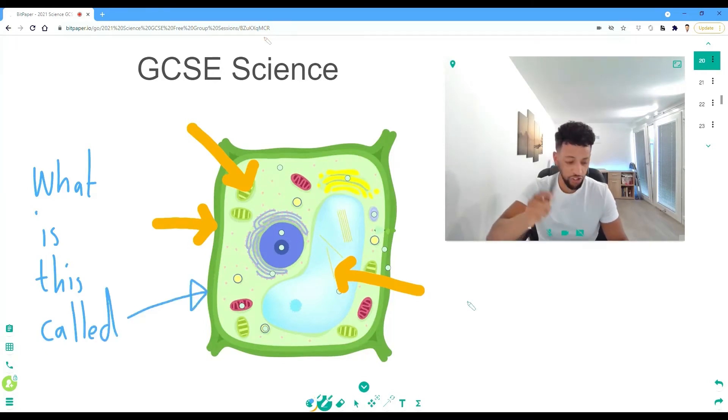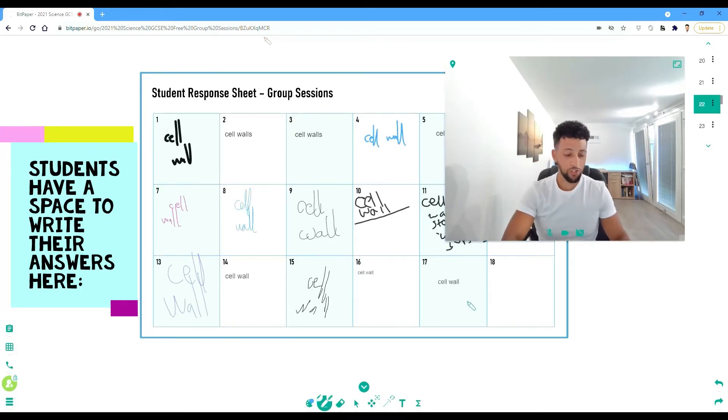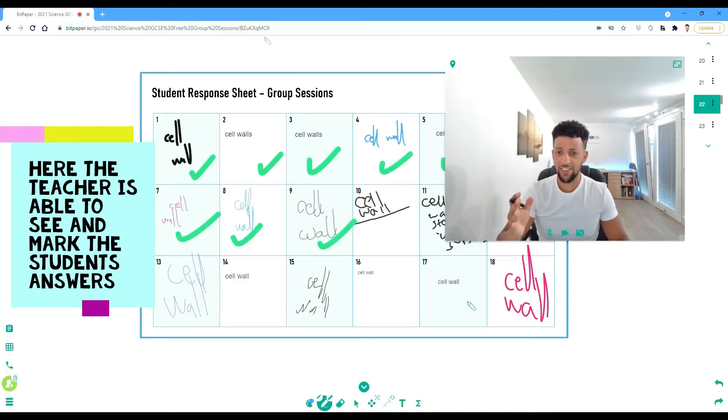Let's go to the student answer sheet now. You've got about five seconds to think about it. Put your answers down now. We've just got the last answer being written. Ah, perfect. I can confirm we've got a clean sweep here.